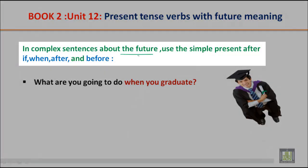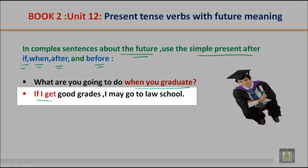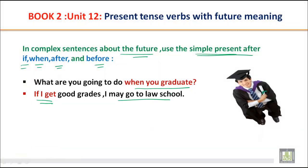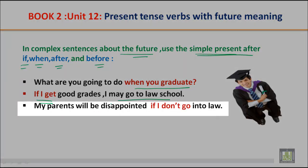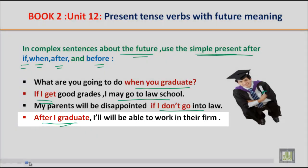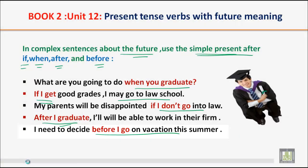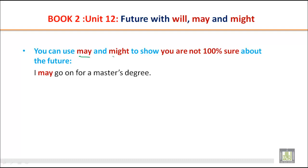In complex sentences about the future, use the simple present after if, when, after, and before. For example: 'If I get good grades, I may go to law school.' 'My parents will be disappointed if I don't go into law.' 'After I graduate, I will be able to work in their firm.' 'I need to decide before I go on vacation this summer.'